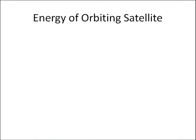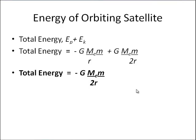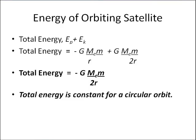We're now going to think about the total energy — that's the potential energy plus the kinetic energy. We've got numbers here, so we calculate this, and if we do the sum, we work out the total energy is equal to −G×M_Earth×m divided by 2r. That's the total energy, and this energy is constant for a circular orbit because the radius stays constant.